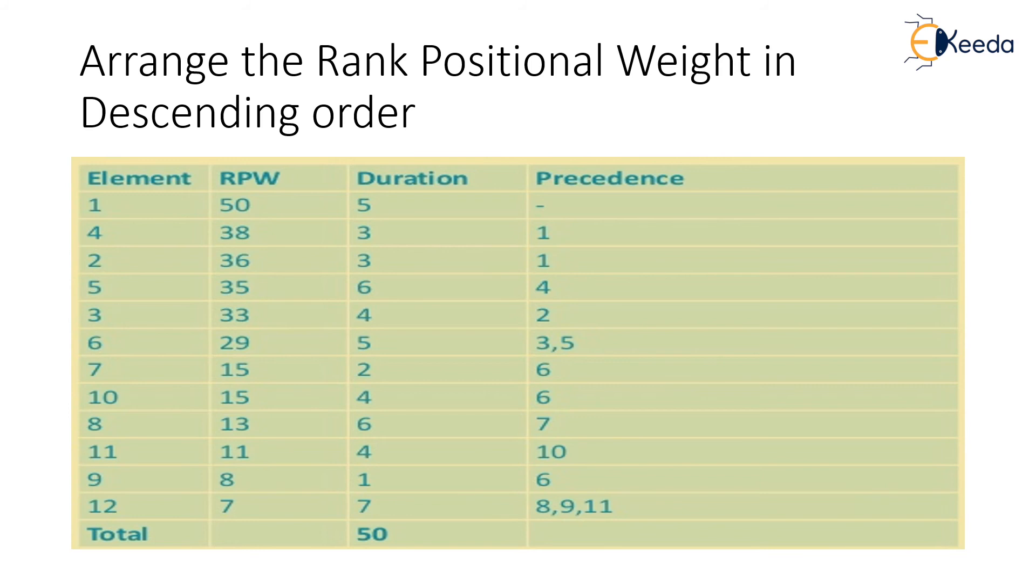And based upon that rank positional weight order in the descending order we arrange the elements as 1, 4, 2, 5, 3, 6, 7, 10, 8, 11, 9 and 12.